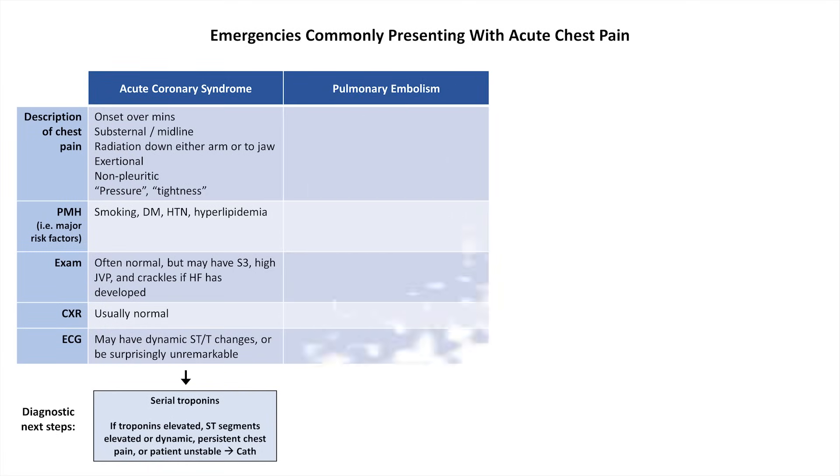Moving on to PE, the pain typically comes on over seconds to minutes, lateralizes to the side of the embolism without radiation, is non-exertional, but is pleuritic. The single most common word to qualitatively describe pain from a PE is sharp, but this is not so consistent as to put much weight on it.